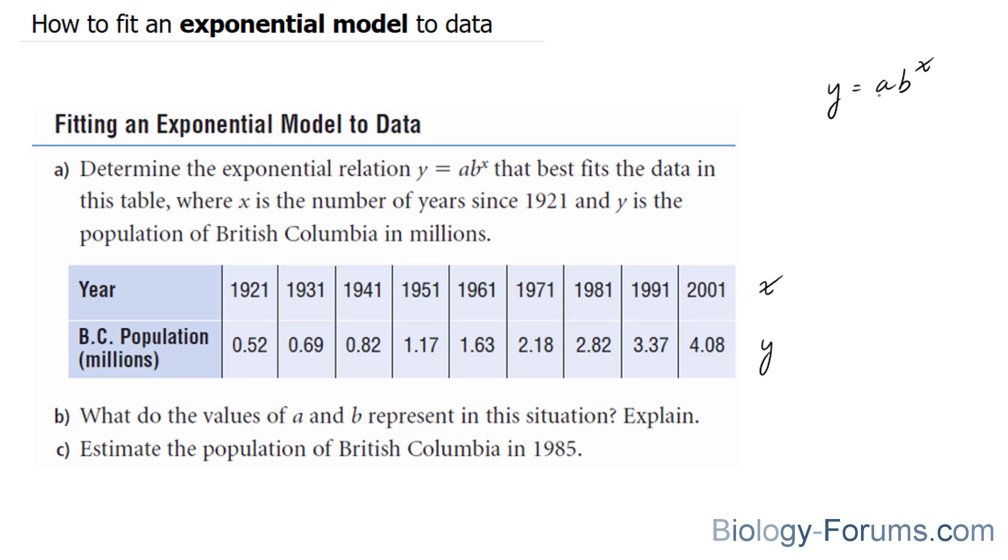a represents your starting value, and your starting value is at 0.52. b is your base, and when b is greater than 1, that means the population is growing, and when it's less than 1, it means that the population is declining.